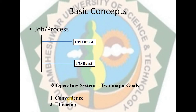Convenience means how easily our layman user can operate the operating system — for example, providing a good graphical user interface. Efficiency means how efficiently we are using our resources. Keeping in mind these two goals, one is convenience and the second is maximum efficiency, we design our operating system.